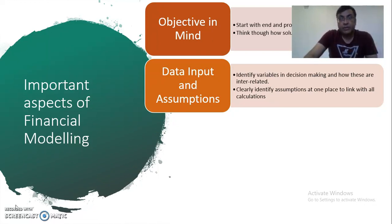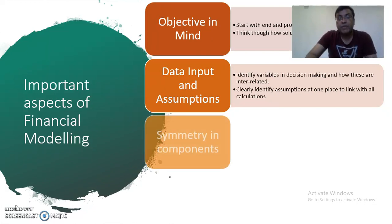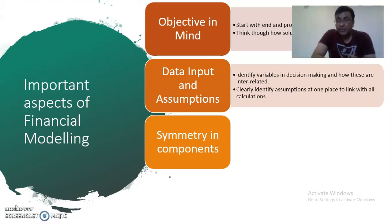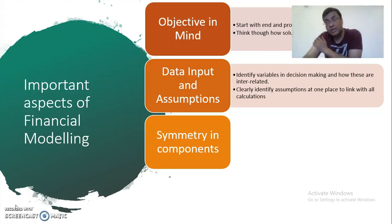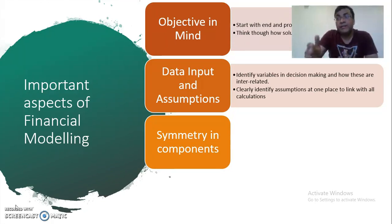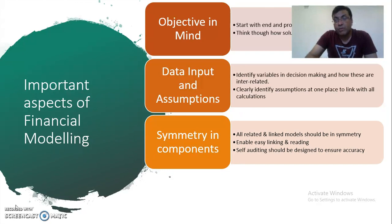After deciding the data input requirements and assumptions, we do the symmetry in components. While doing the calculations, you need to make sure that the different sheets in the model are organized symmetrically. Sometimes the model can span multiple sheets — for example, like three-statement financial models, which we will look at in the next video. You need to have symmetry in the components so that you can read them easily and copy, paste, and link them in an easier manner.